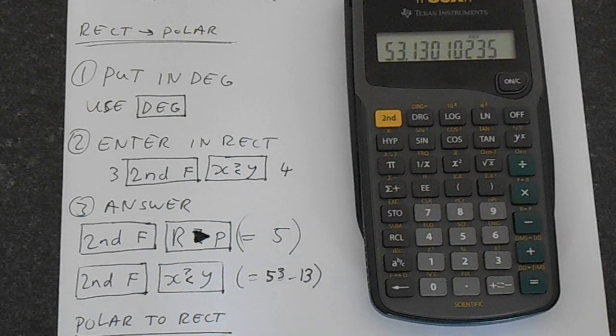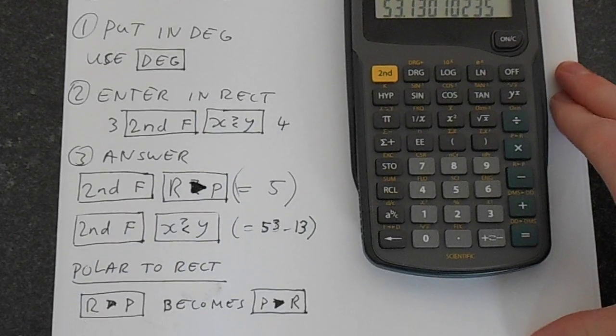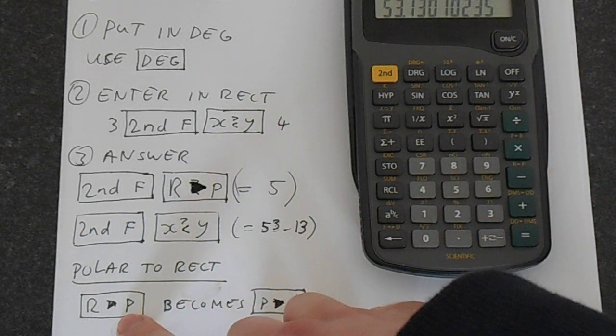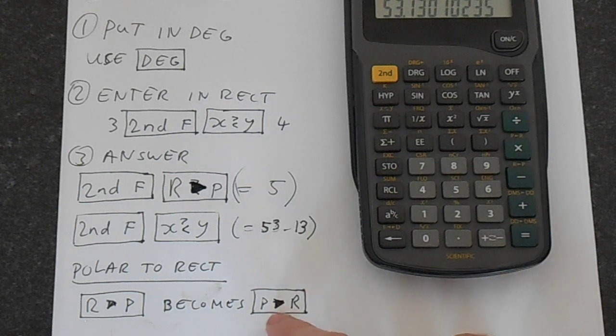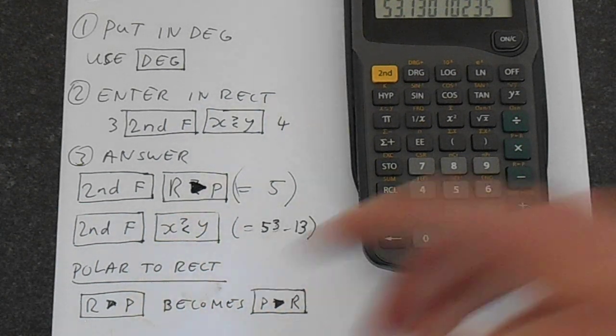and we get r. And if you want to do polar to rectangular, just follow exactly the same steps, but instead of pressing the r to p button in this step, you would press the p to r button. So you'll go polar to rectangular as opposed to rectangular to polar.